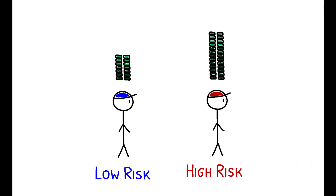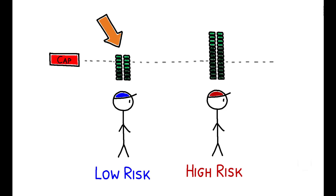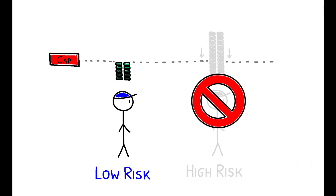So, what happens when we introduce an interest rate cap? On the one hand, this forces the bank to reduce its profit margin on this loan, which benefits the low-risk borrower. But if the cap is set below the marginal cost of lending to the high-risk borrower, the bank will no longer be willing to lend to this borrower at all. This is a central trade-off faced by policymakers: while a cap lowers interest rates for those consumers who are able to get a loan, it potentially restricts credit access for riskier borrowers.